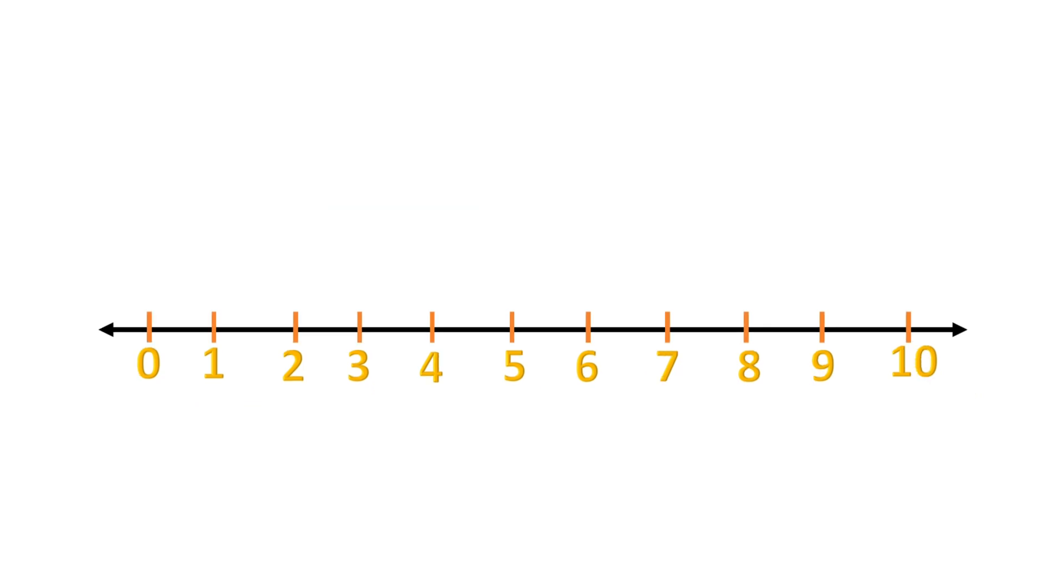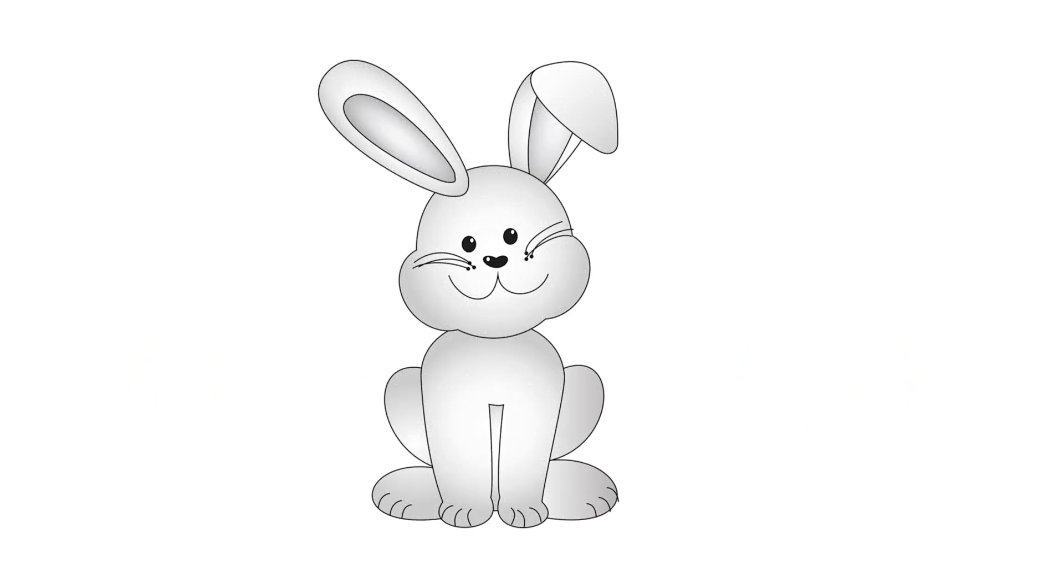This is a number line. On this number line we have from 0 all the way up to 10. This is Rocky the rabbit. He will help us with adding on the number line. Let's begin.